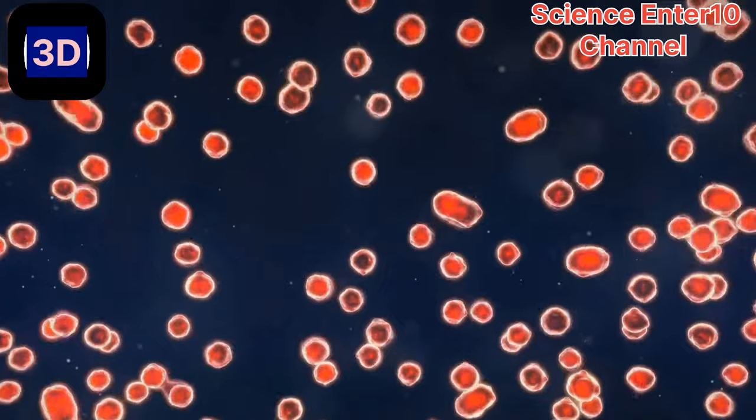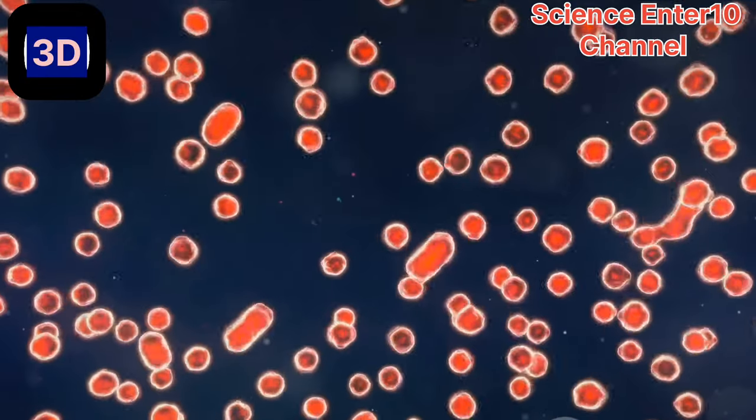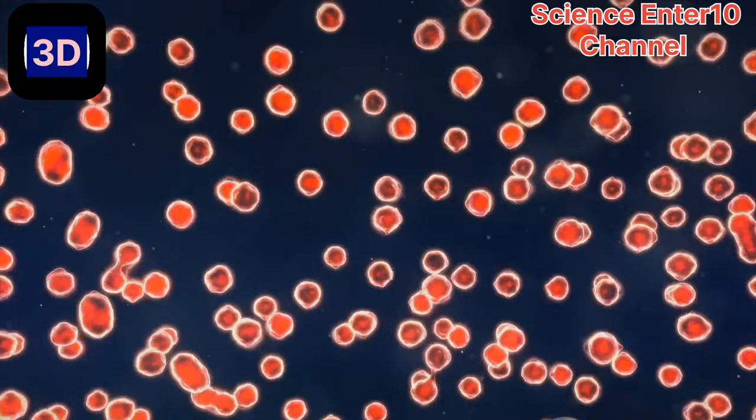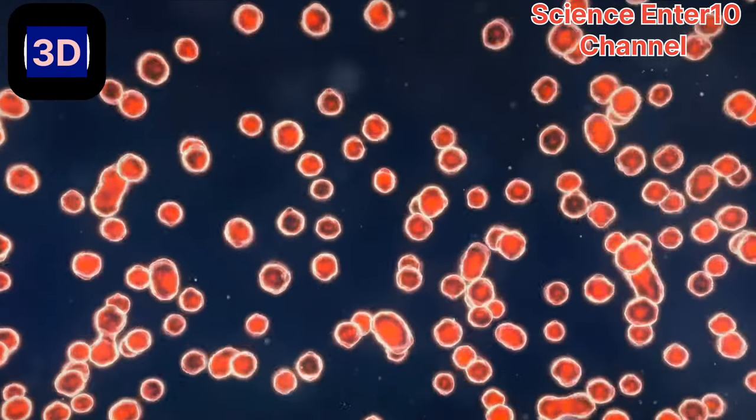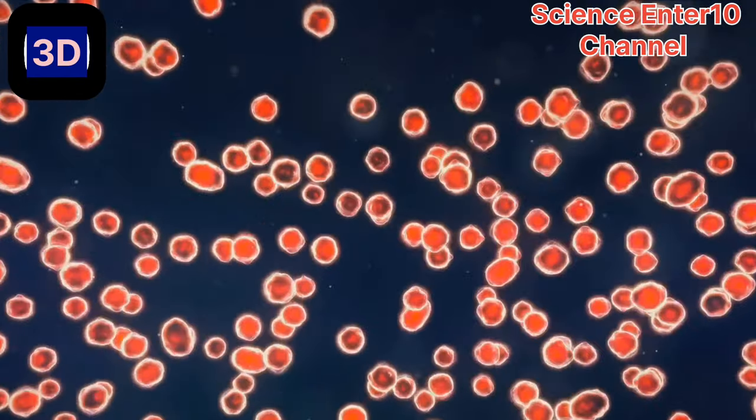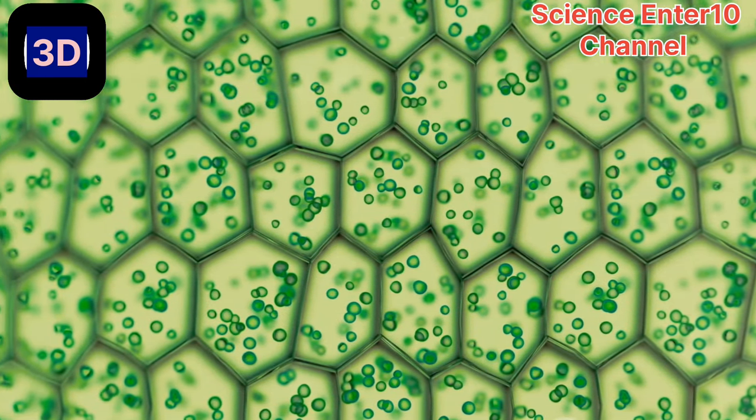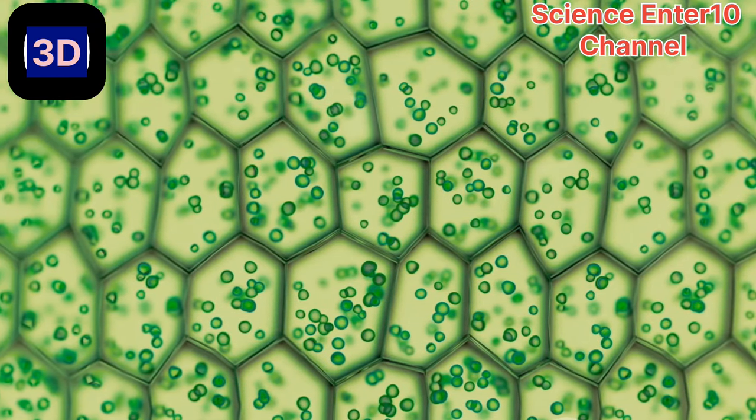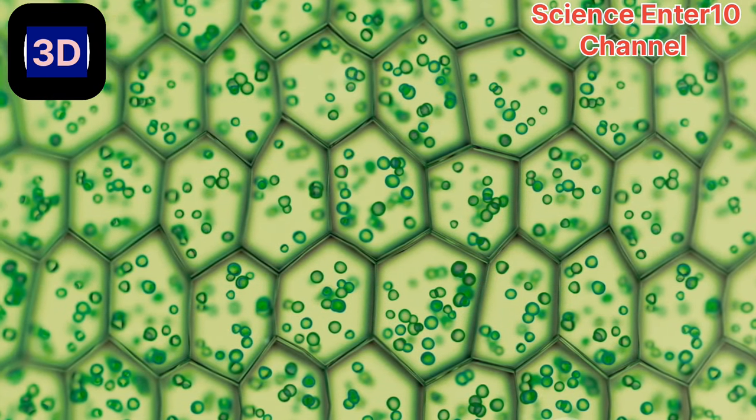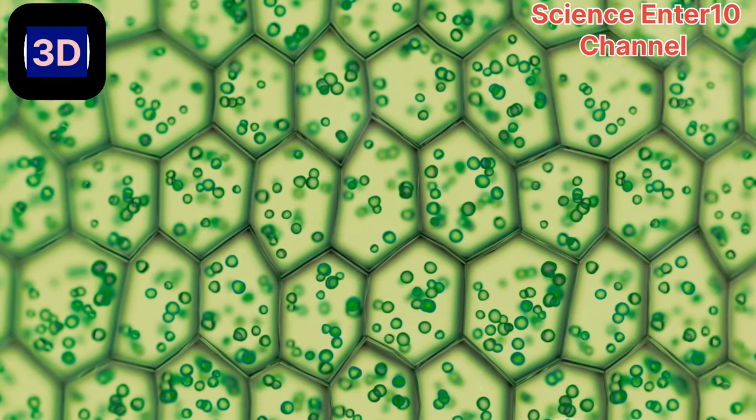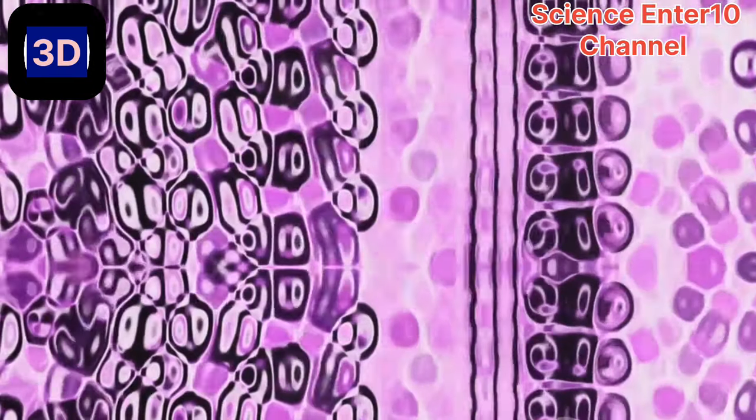Let's take a quick trip down memory lane. First, we stepped into the preparatory phase, the interphase, where the cell gears up for division, duplicating its DNA and organelles. Then, we moved into the prophase, where the chromosomes condense and the nuclear envelope breaks down.